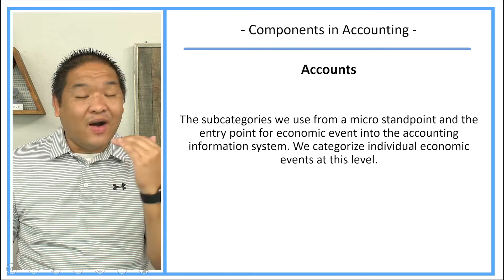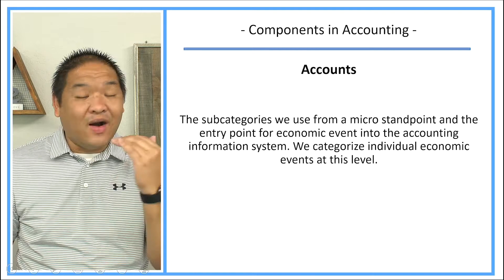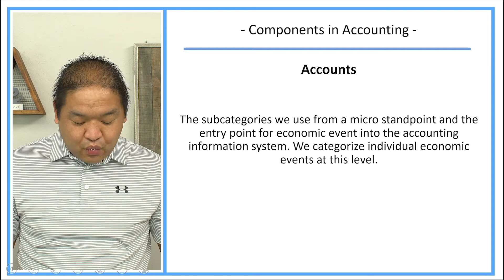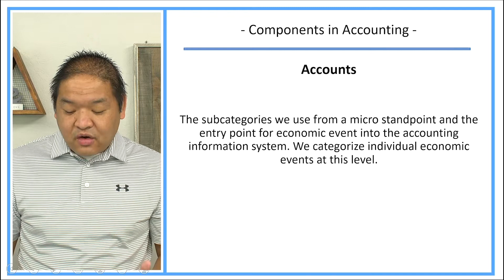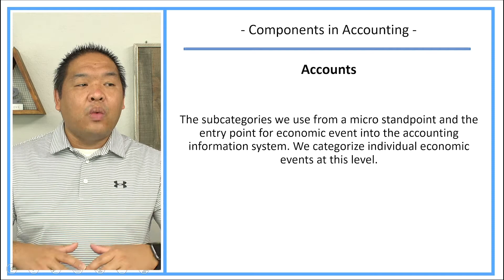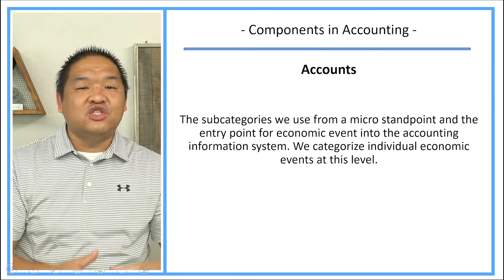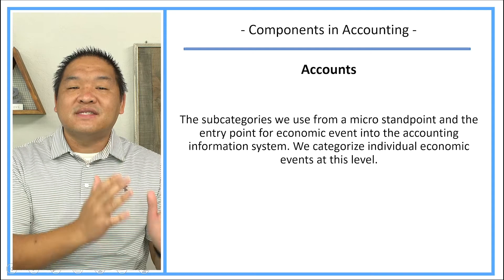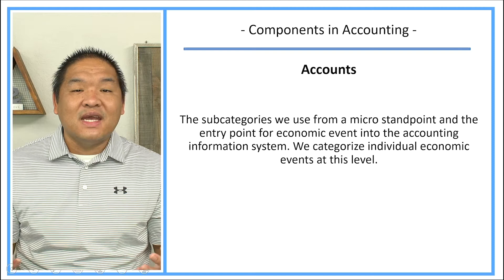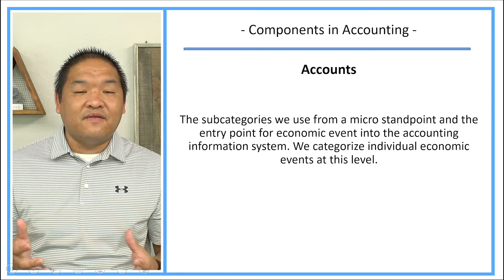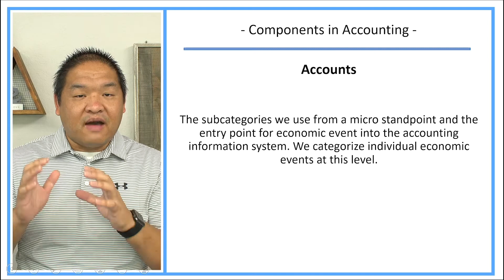Accounts are the subcategories we use from a micro standpoint — the entry point for economic events in the accounting information system. We categorize individual economic events at this level. When we have an economic event, we categorize it into its specific account. All of those accounts are linked to one of the six components, which helps us keep organization when processing the data from economic events that affect the company's basic accounting equation. So we have accounts, and those accounts are part of components.